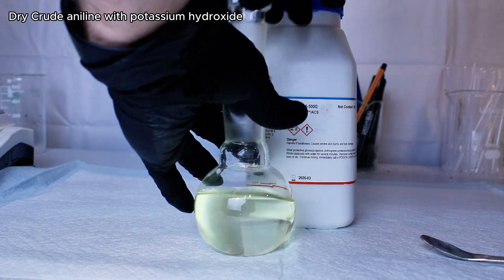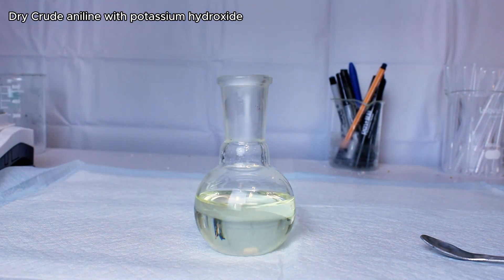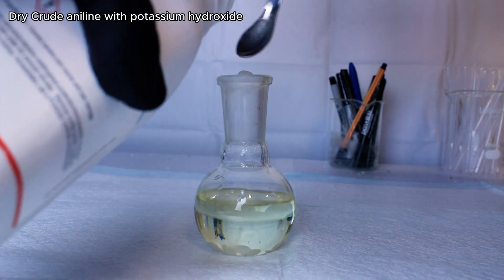Now to dry and purify my crude aniline, I first add some potassium hydroxide and allow it to sit overnight to absorb any water that might be present.